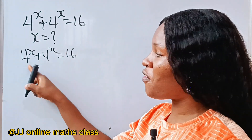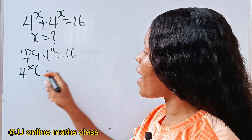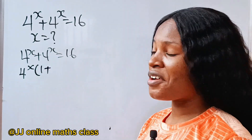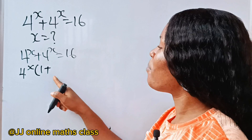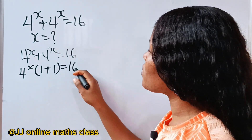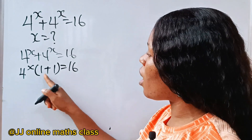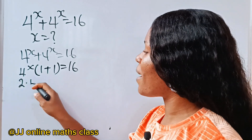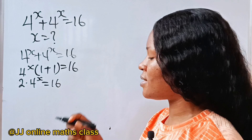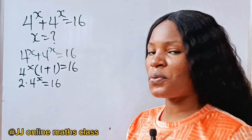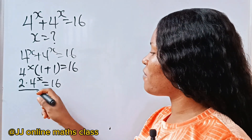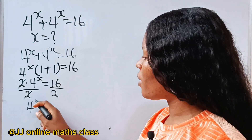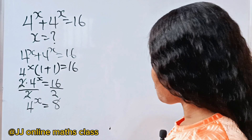What do they have in common? 4 to the power of x. So if we write 4 to the power of x, and divide each term by 4 to the power of x, we get one plus one, which is equal to 16. So this can be written as 2 multiplied by 4 to the power of x is equal to 16. Now let's divide both sides by 2, and we are left with 4 to the power of x is equal to 8.